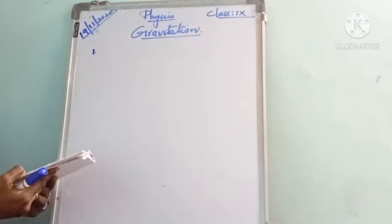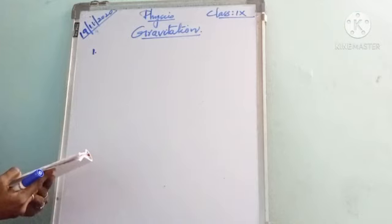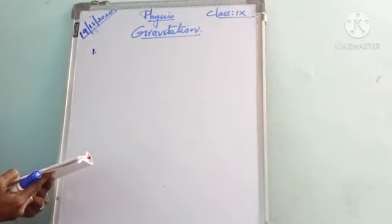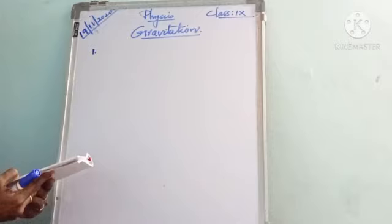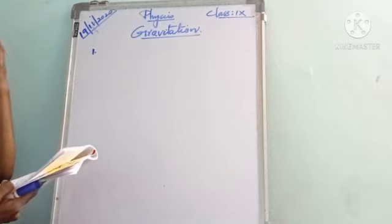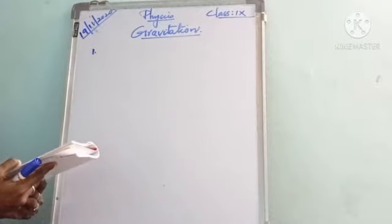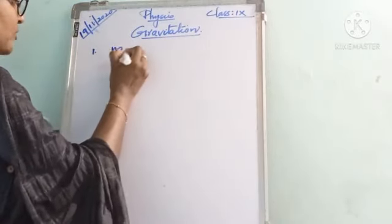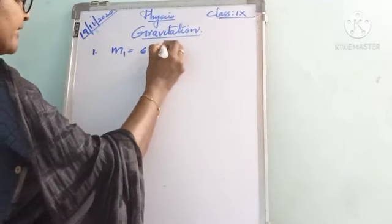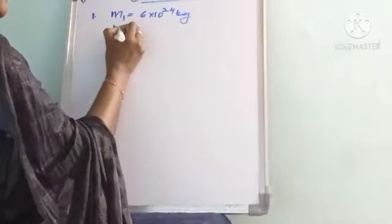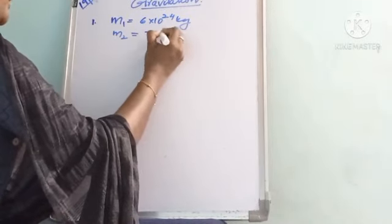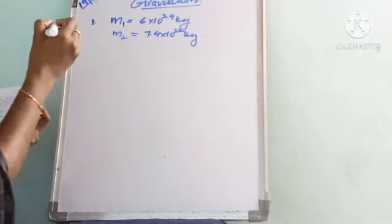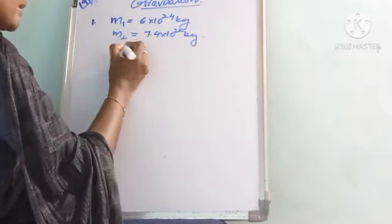The first question: the mass of Earth is 6×10²⁴ kg and that of Moon is 7.4×10²² kg. If the distance between the Earth and the Moon is 3.84×10⁵ km, then calculate the force exerted by the Earth on the Moon.